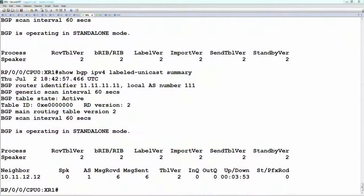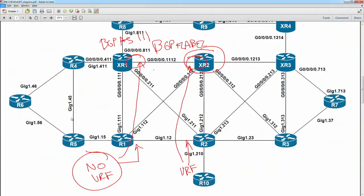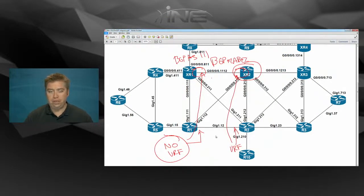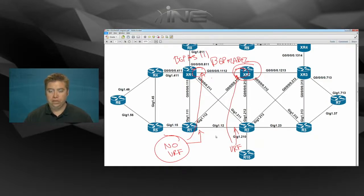Next step is that we're going to have the CSC-PE to CSC-CE routing between router one and router two. Router two is the PE, router one is the CE. We're going to be running IGP plus LDP. In this case, we're going to create a new OSPF process — just for that customer — and we're going to enable LDP on the interface as well.